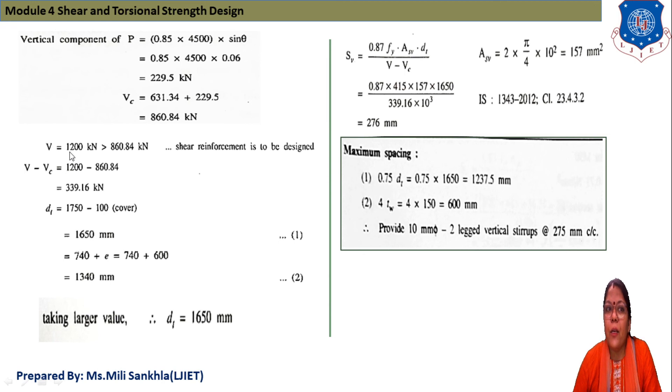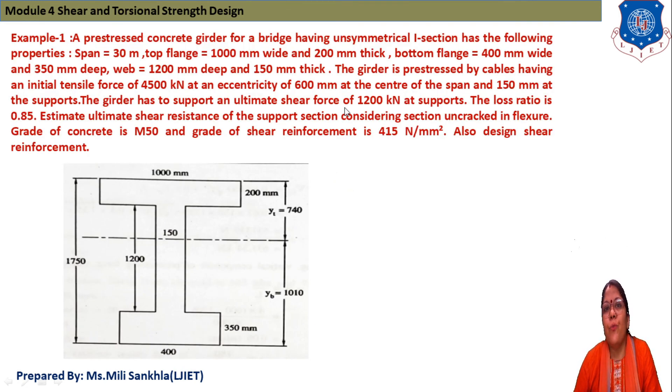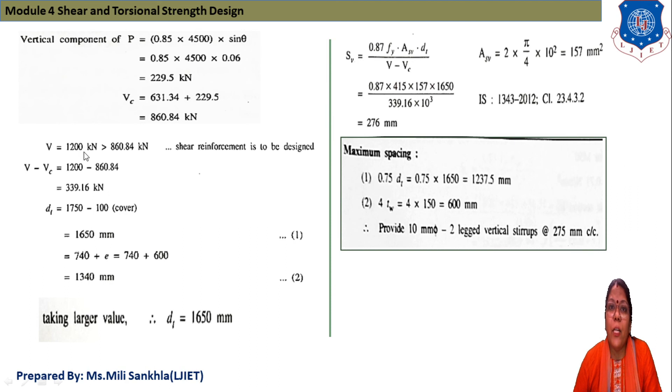Our V 1200 kN greater than 860.84 kN. Here ultimate shear force is given 1200 kN at support. This will be given in data. And we compare the calculated value. And here our V that given ultimate shear stress 1200 kN is greater than 860 kN, so shear reinforcement is to be designed. If this value is less than compared to this one, there is no need to provide. For which force we provided shear reinforcement, we find out difference between V minus VC ultimate shear force. 1200 minus this VC 339.16 kN net shear force and we provide shear reinforcement for this shear force.